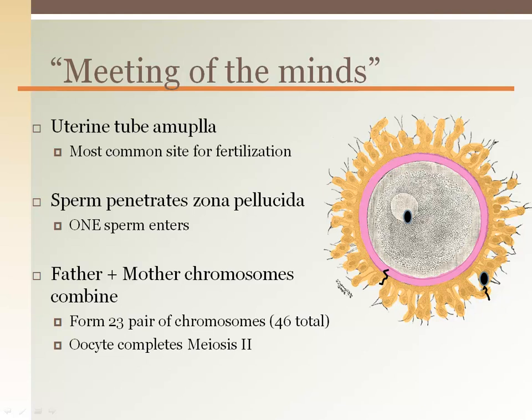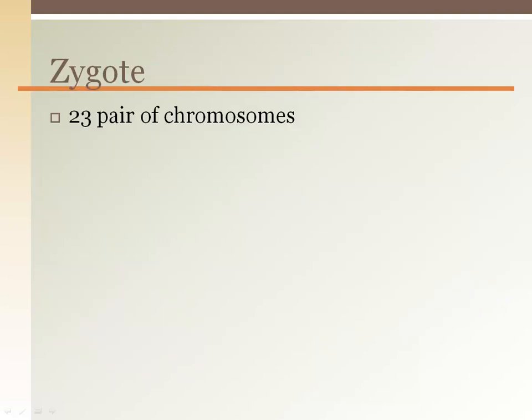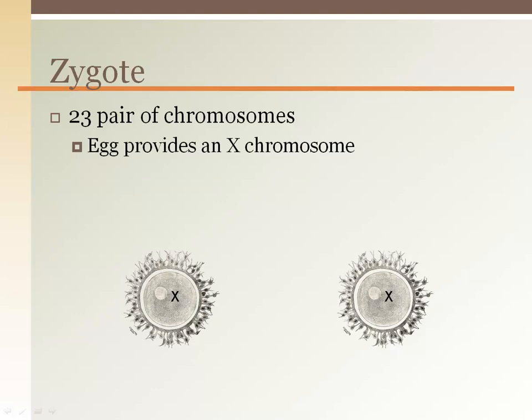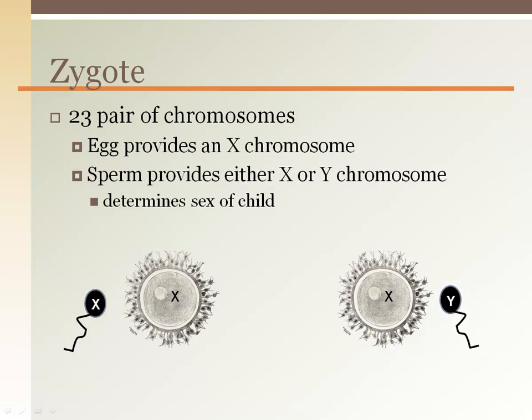The 23 chromosomes from the sperm combine with the 23 chromosomes in the egg nucleus to complete meiosis II and form a 46-chromosome zygote. One of the 23 pairs of chromosome sets determines the sex. The egg always contributes an X chromosome to the zygote; however, sperm may either have an X or a Y chromosome.